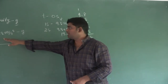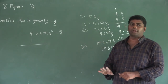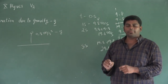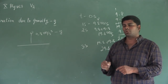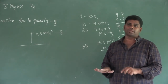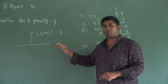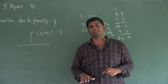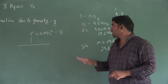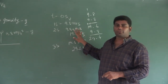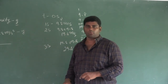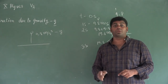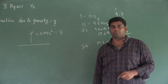The acceleration due to gravity is 9.8 meters per second square — it is the same acceleration. The value is 9.8 m/s². The average value is 9.8 m/s². The height and depth may vary slightly, but the average value is 9.8 m/s². Acceleration due to gravity value is 9.8 meters per second square. Thank you.